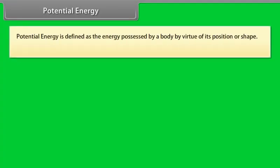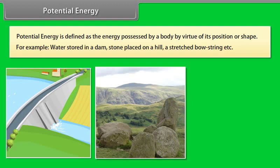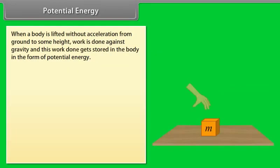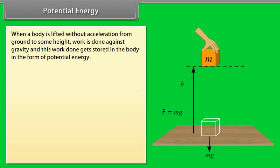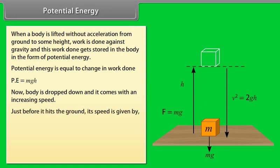Potential energy. Potential energy is defined as the energy possessed by a body by virtue of its position or shape. For example, water stored in a dam, stone placed on a hill, a stretched bow string. When a body is lifted without acceleration from ground to some height, work is done against gravity, and this work done gets stored in the body in the form of potential energy. Potential energy equals change in work done, so potential energy equals mgh. Now body is dropped down and it comes with an increasing speed. Just before it hits the ground, its speed is given by v square equals 2gh. This equation can be written as half mv square equals mgh.